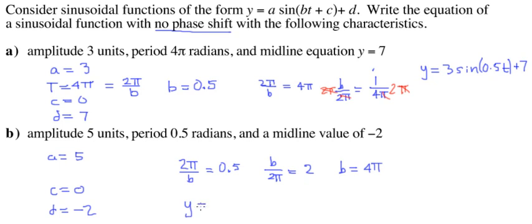So our equation now is y equals 5 sine 4πt. 4π is our b value and then d is minus 2.